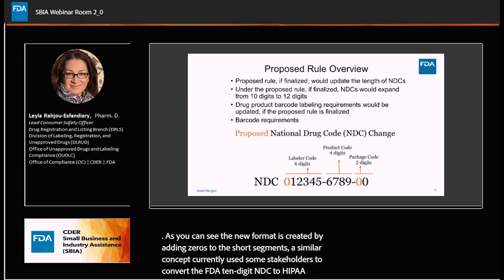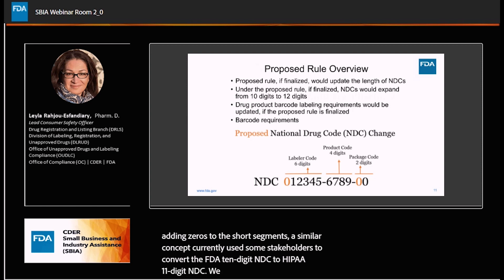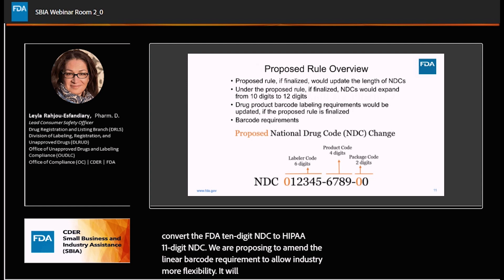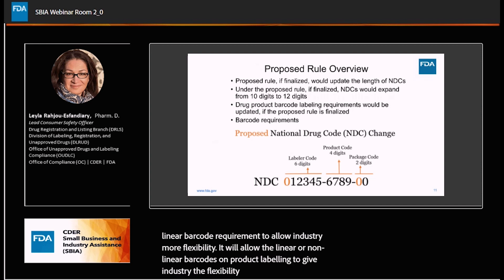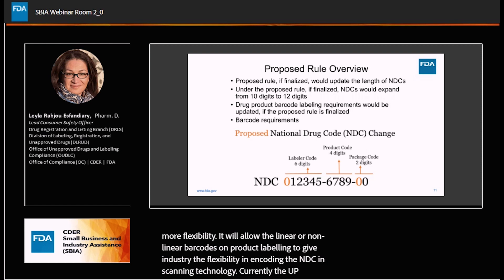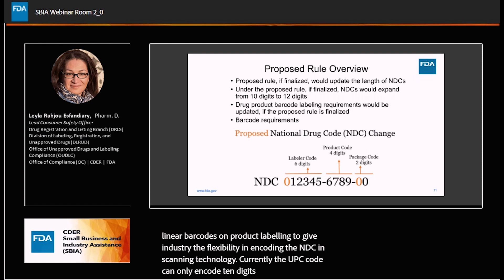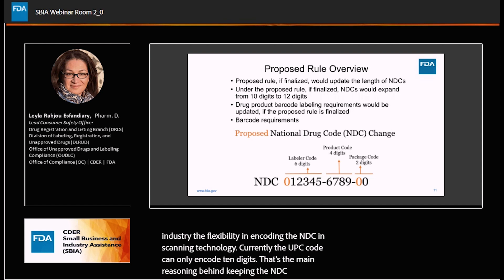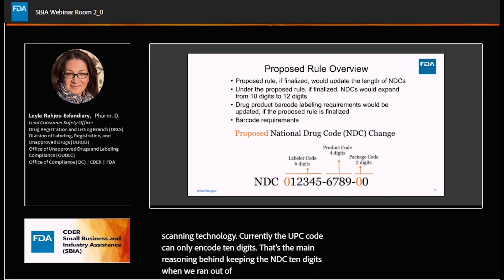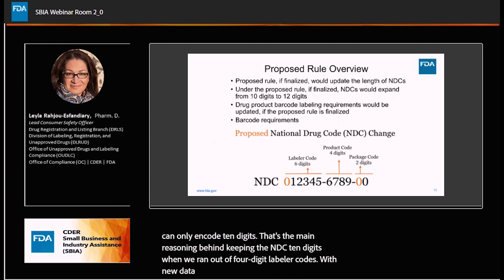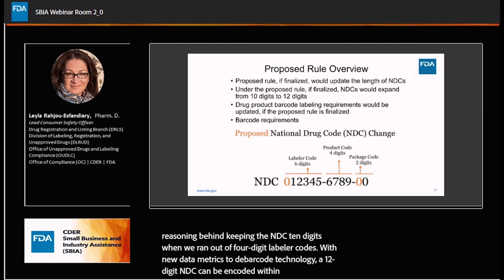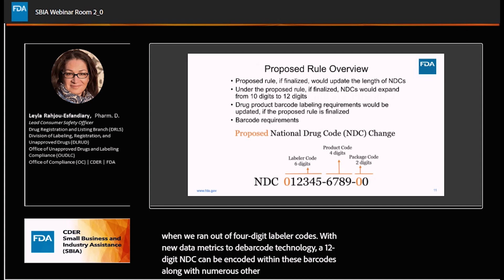We are also proposing to amend the linear barcode requirement to allow industry more flexibility. It will allow linear or non-linear barcodes on drug product labeling to give industry flexibility in encoding the NDC in scanning technology. Currently, the UPC code can only encode 10 digits — that's the main reasoning behind keeping the NDC at 10 digits when we ran out of four-digit labeler codes. With new Data Matrix 2D barcode technology, a 12-digit NDC can be encoded within these barcodes along with numerous other information like lot numbers, GTIN, and more.